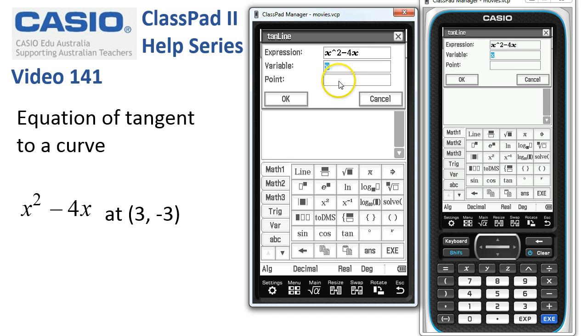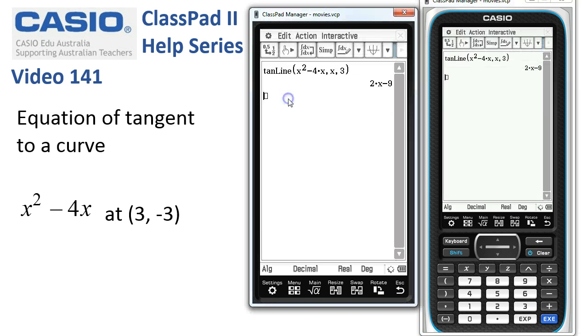It's picked up our expression, the variable is x, and at the point - now, the point actually just means the x-coordinate of 3. So we'll type in 3 and tap OK, and there it is. There's the equation of the tangent: y = 2x - 9.